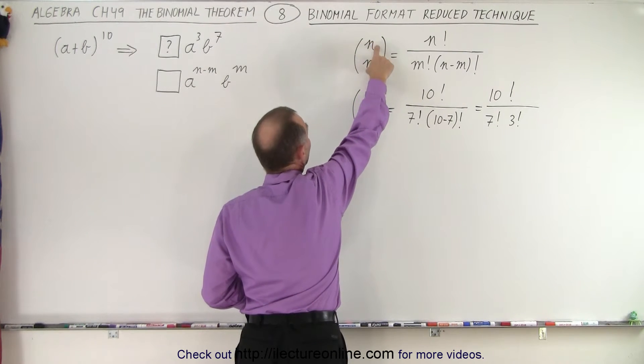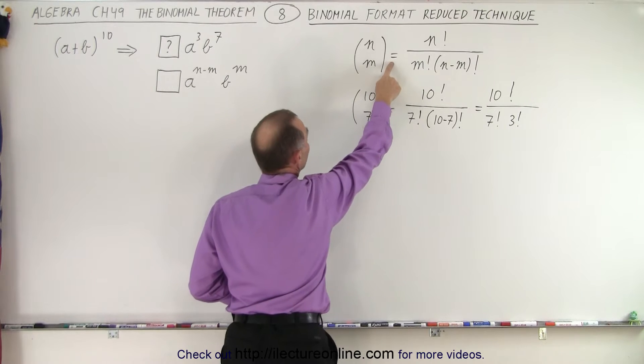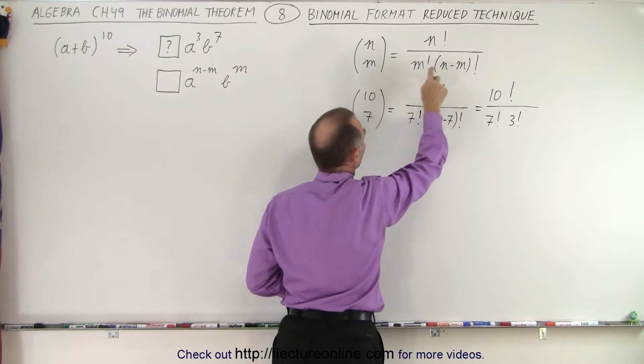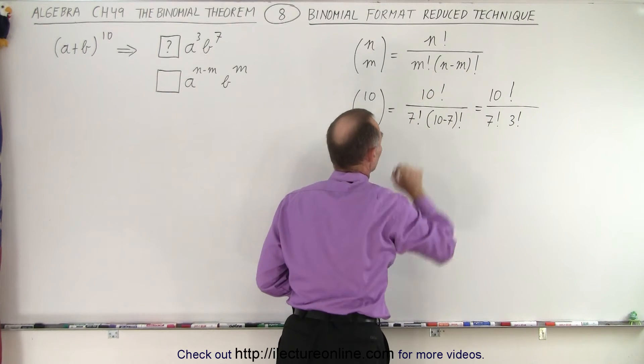It's called a reduced technique and it's written like this. We have parentheses, two numbers, n and m, and by definition that means the top number factorial divided by the bottom number factorial divided by the difference between the two numbers factorial.